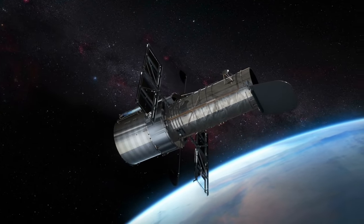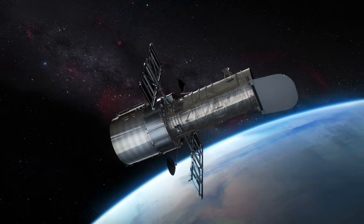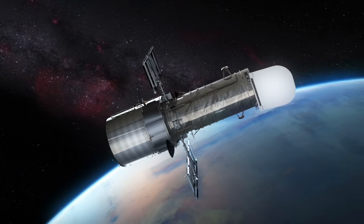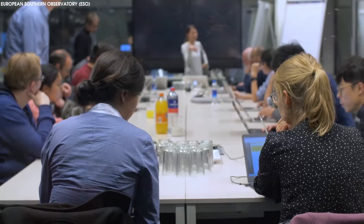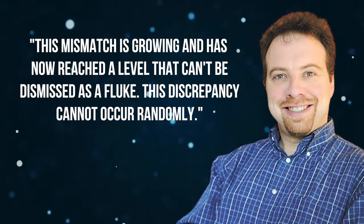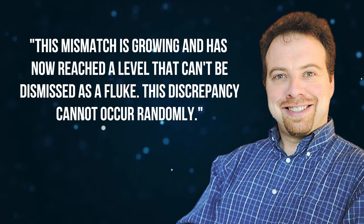The tension of Hubble between the early and late universe may be the most exciting development in cosmology in decades. Lead researcher and Nobel laureate Adam Reiss of the Space Telescope Science Institute and Johns Hopkins University in Baltimore, Maryland, stated, this mismatch is growing and has now reached a level that can't be dismissed as a fluke. This discrepancy cannot occur randomly.